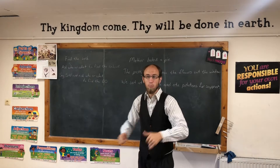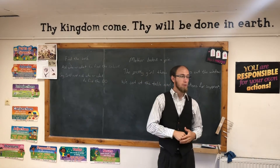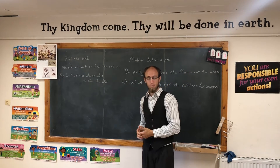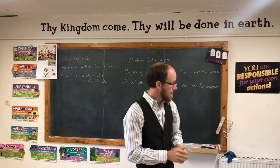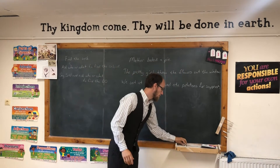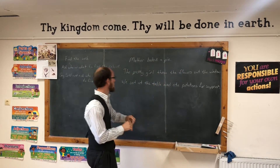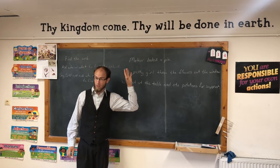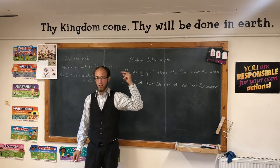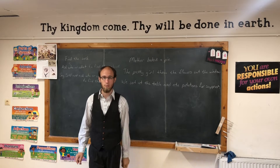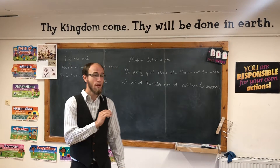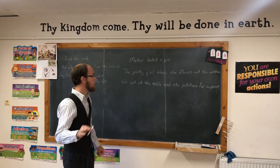I helped my brother. What receives the action of being helped? My brother. My brother is the direct object. Now we're going to look at the direct object in the sentence, and this is one of my favorite sentences to stick in your head to remember direct objects by: Mother baked a pie. That simple.